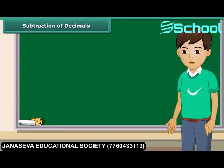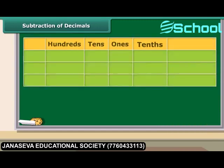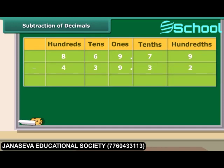Subtraction of decimals is similar to subtraction of any other numbers. For the subtraction of 439.32 from 869.79, write the bigger number on top and the smaller number below it with the decimal point in a vertical line. Subtract as for whole numbers, placing the decimal point in the result directly under the other decimal points.